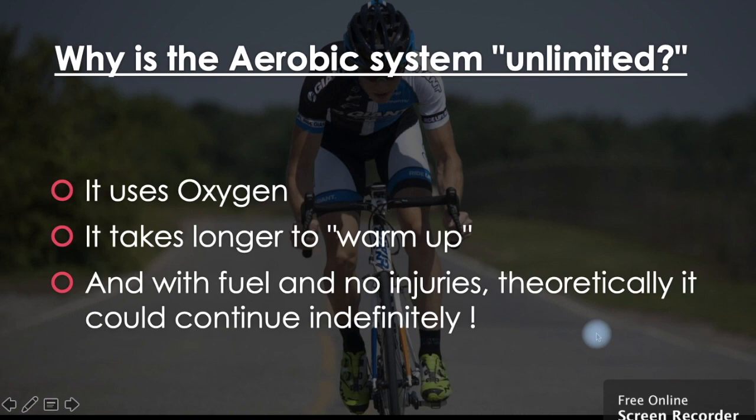So why is the aerobic system unlimited? It uses oxygen. Our ATP-PC system and our lactic acid, they don't use oxygen. That's why the energy is available quick and they run out after a few minutes. But our aerobic system uses oxygen, so it takes a bit longer to warm up. So theoretically, with fuel, that's our food, and no injuries, you could ride or run or swim forever.